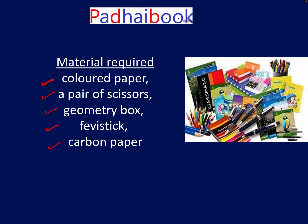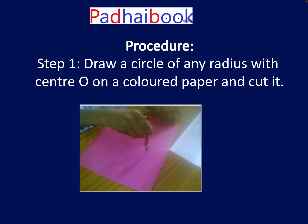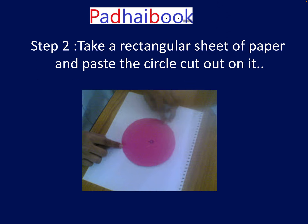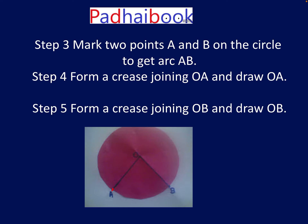For the first step, on a colored paper we are going to draw a circle of appropriate radius and cut it out. Take a rectangular sheet of paper and paste the circle on it. Mark the center of the circle as point O. Now take any two points A and B on the circle and form a crease joining OA and similarly a crease joining OB. So angle AOB is the angle subtended by arc AB at the center of the circle.